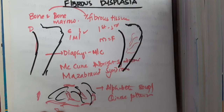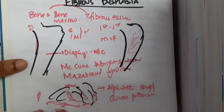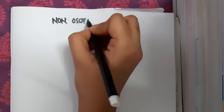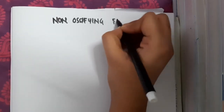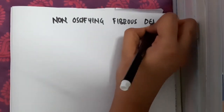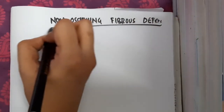Malignant transformation in fibrous dysplasia is rare. The next important condition is the non-ossifying fibrous defect, which is also a fibrous lesion but here there is no ossification.